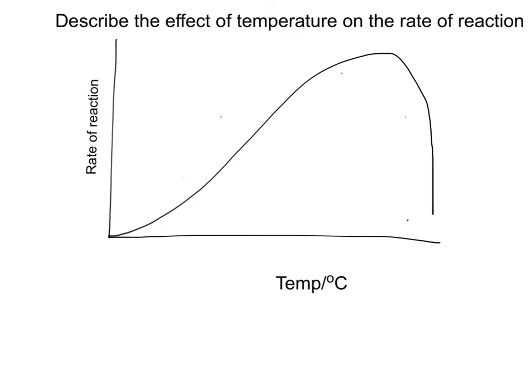This graph asks you to describe the effect of temperature on the rate of an enzyme-controlled reaction. The describe implies that you've got to tell the examiner what the graph is doing. You can see that the rate of reaction increases to an optimum or maximum rate and then it decreases. That's all you need to tell the examiner, but you won't get the mark unless you refer to the x-axis. So the rate increases between whichever temperatures to a maximum or optimum at a specific temperature and then it decreases between which temperatures.